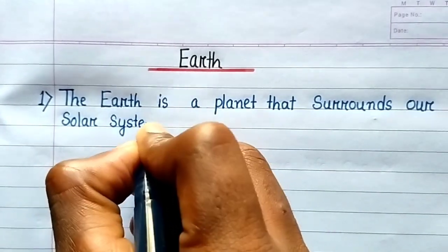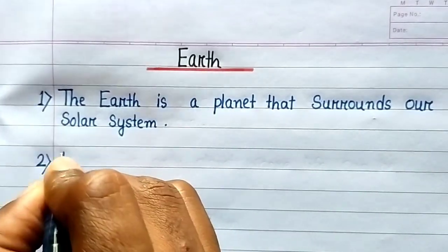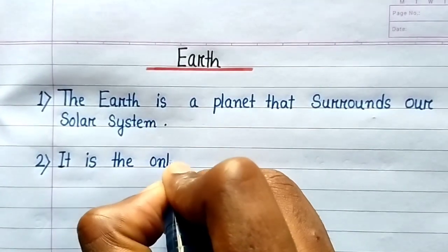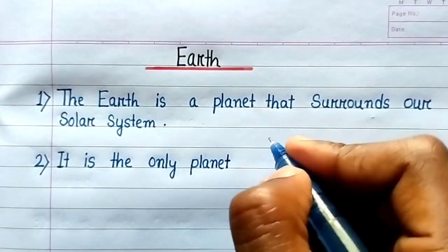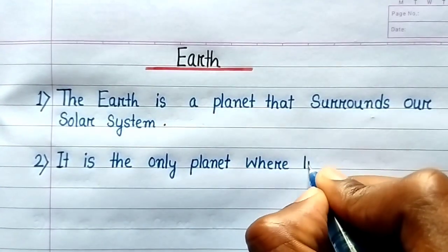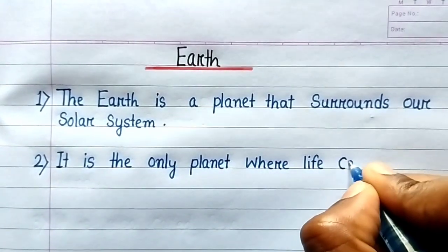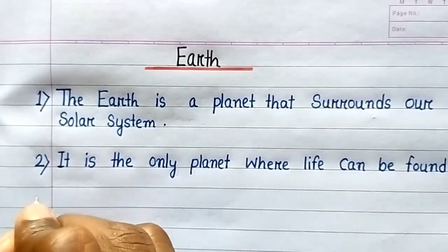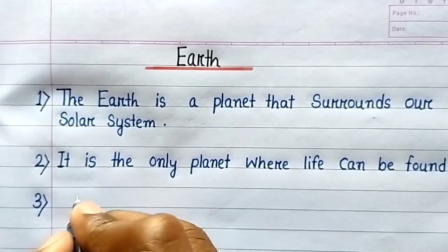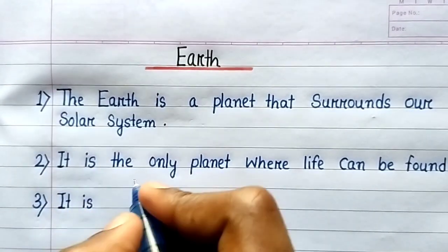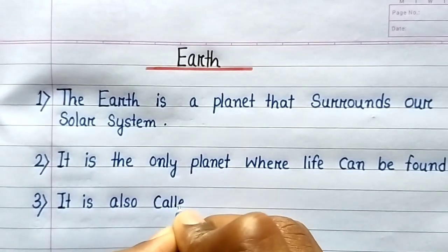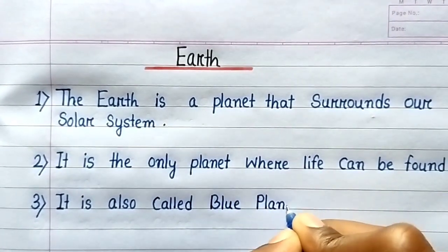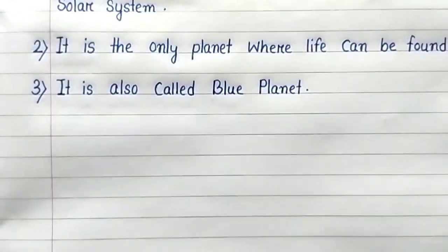First line: The Earth is a planet that surrounds our solar system. Second line: It is the only planet where life can be found. Third line: It is also called blue planet.